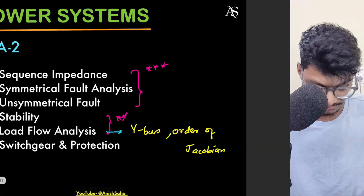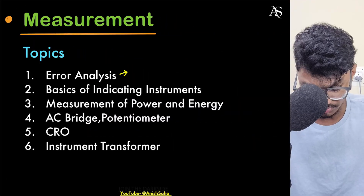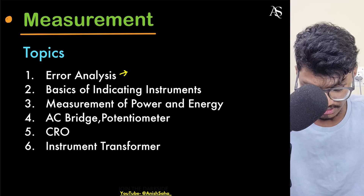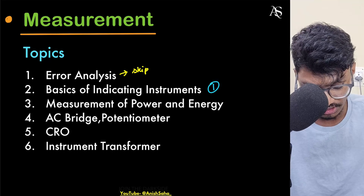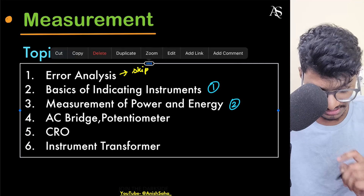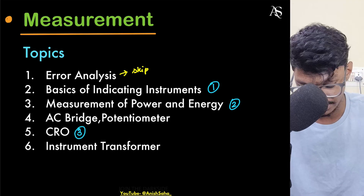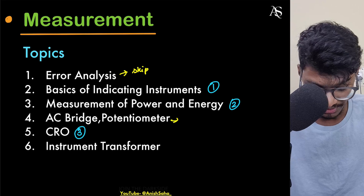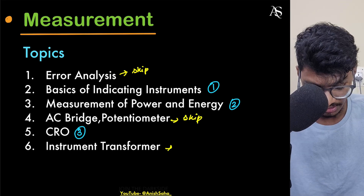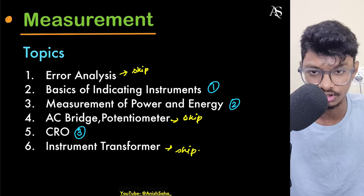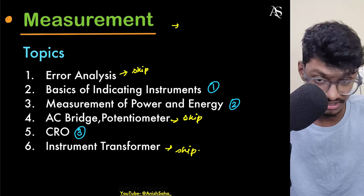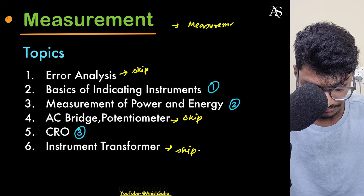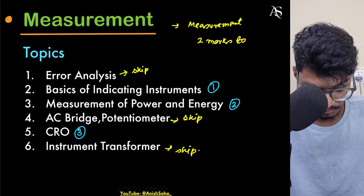Next is Measurements. For the past five to six years, no questions have come from error analysis, so you can skip it. Basics of instruments and indicating instruments are priority one. Measurement of power and energy is priority two. CRO questions are also being asked. AC bridges, potentiometers, and instrument transformers can be skipped if you are crunched on time. The average weightage of measurements is 2 to 4 marks.